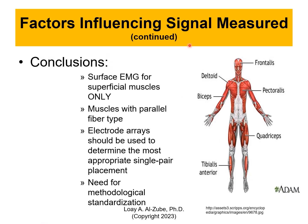Surface EMG works for superficial muscles only — we can't do EMG for muscles deep in the tissue. Muscles with parallel fiber types only, because we need alignment with the electrodes. An electrode array should be used to determine the most appropriate single pair placement. I prefer having an array of electrodes rather than only one or two. There is also a need for methodological standardization, and that is not there yet, so measuring the EMG requires a lot of standardization.